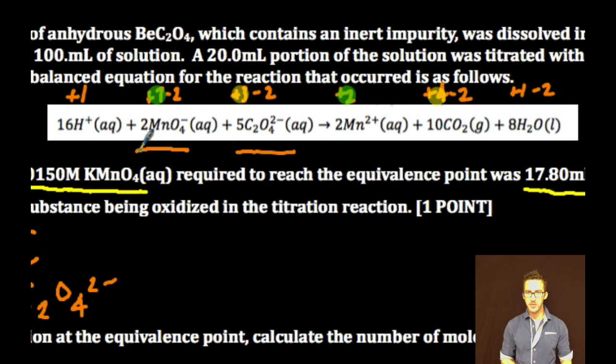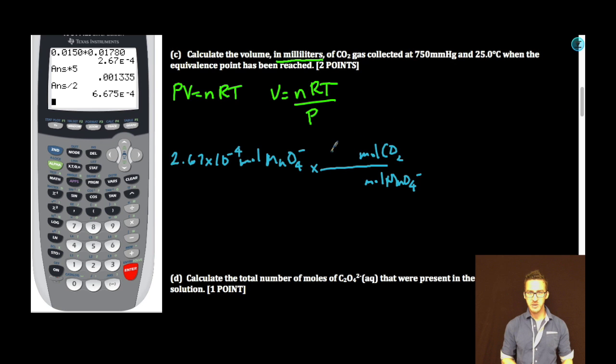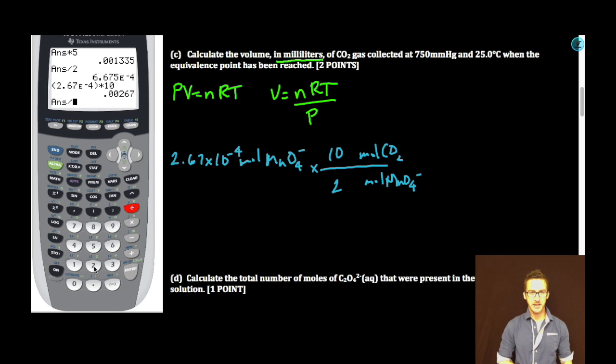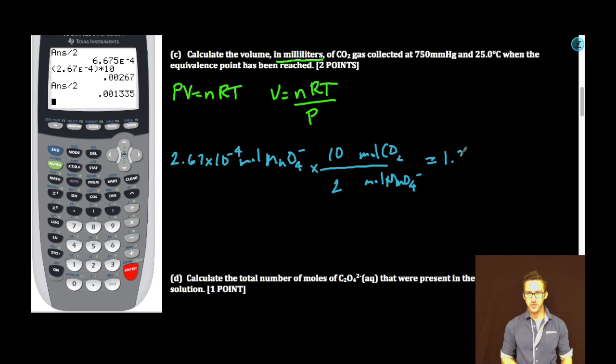To determine that relationship, I'm going to again look at permanganate, but this time compare it to CO2. For every 2 moles of permanganate ion I react, I'm going to generate 10 moles of carbon dioxide. So our relationship here, 10 to 2. Calculator time, 2.67 times 10 to the minus 4, times 10, divided by 2, gives me 1.34 times 10 to the minus 3 moles of CO2.